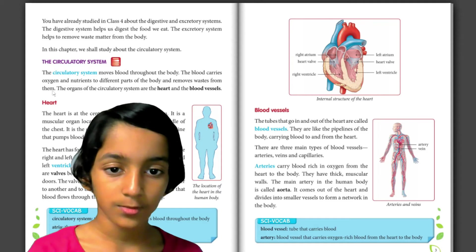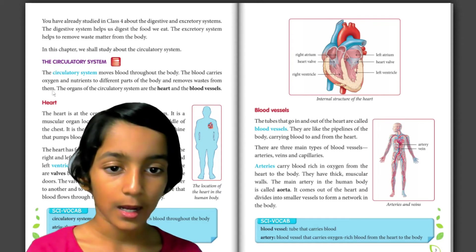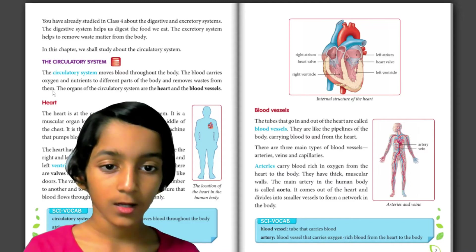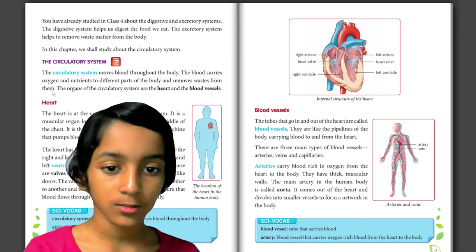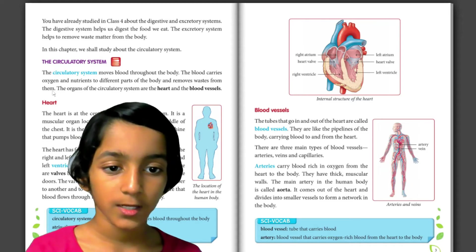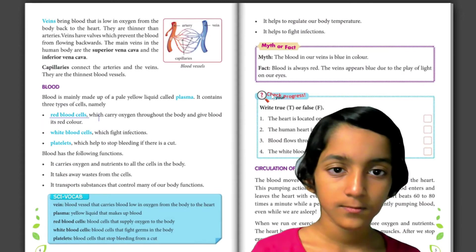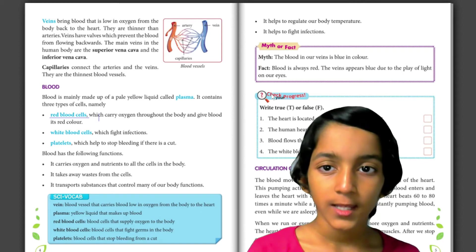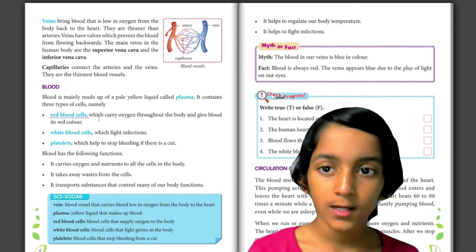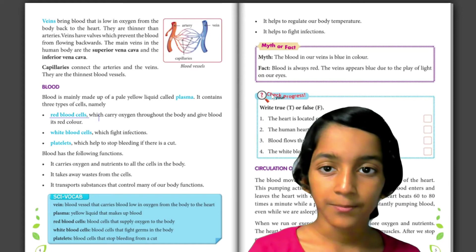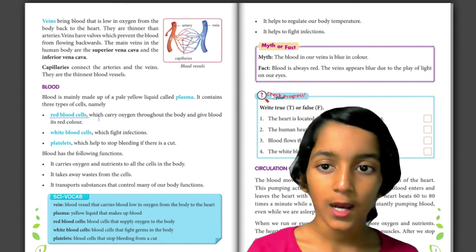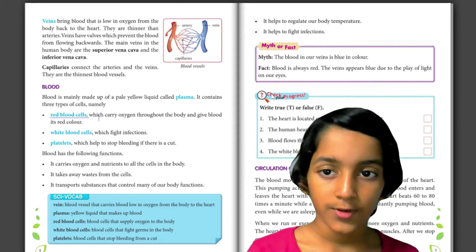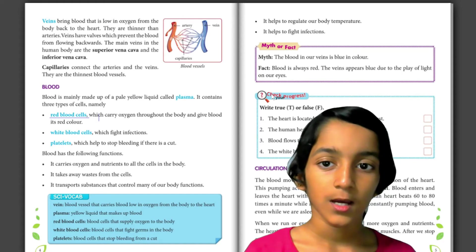Arteries have thick muscular walls. The main artery in the human body is called the aorta. It comes out of the heart and divides into smaller vessels to form a network in the body. Veins bring blood that is low in oxygen from the body back to the heart. They are thinner than arteries. Veins have valves which prevent the blood from flowing backwards. The main veins in the human body are the superior vena cava and the inferior vena cava.